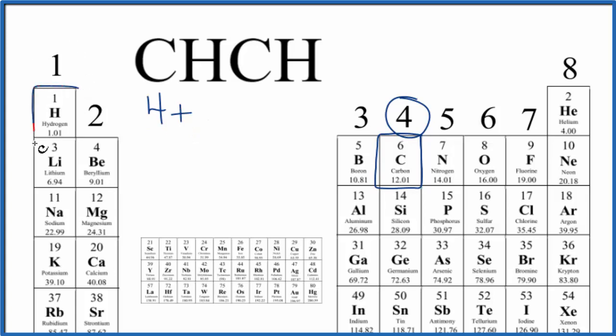Hydrogen, group 1. So hydrogen has 1 valence electron, just like all the elements in group 1. And then we have 4 plus 1 again. This gives us a total of 10 valence electrons here for the CHCH Lewis structure.